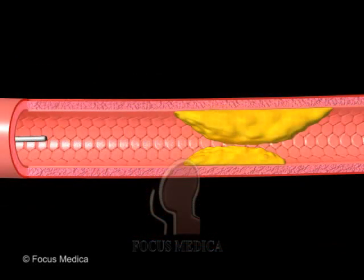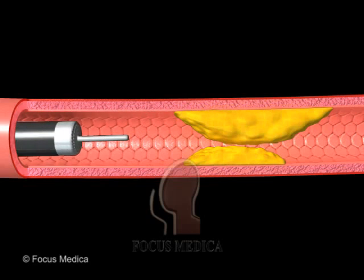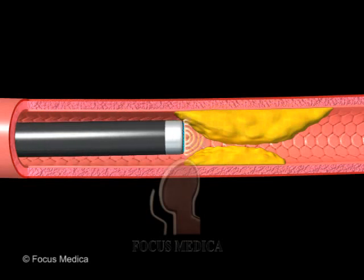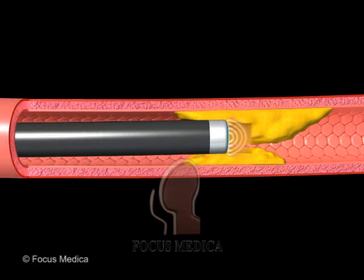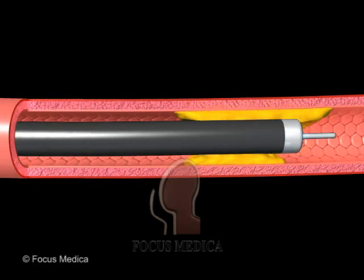In this technique, a thin flexible catheter with a laser at its tip is inserted into an artery and guided to the blockage. When the laser is in position, it emits pulsating beams of light, vaporizing the plaque into gaseous particles.